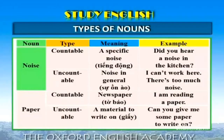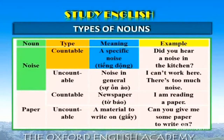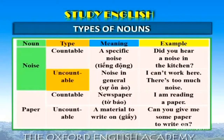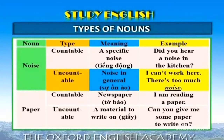Ngoài 2 ví dụ kể trên, bảng dưới đây tổng kết một số danh từ thuộc nhóm này. Noise là danh từ đếm được (countable noun) khi nó có nghĩa là tiếng động - a specific noise. Ví dụ: "Did you hear a noise in the kitchen?" Noise là danh từ không đếm được (uncountable noun) khi nó có nghĩa là sự ồn ào - noise in general. Ví dụ: "I can't work here. There is too much noise."